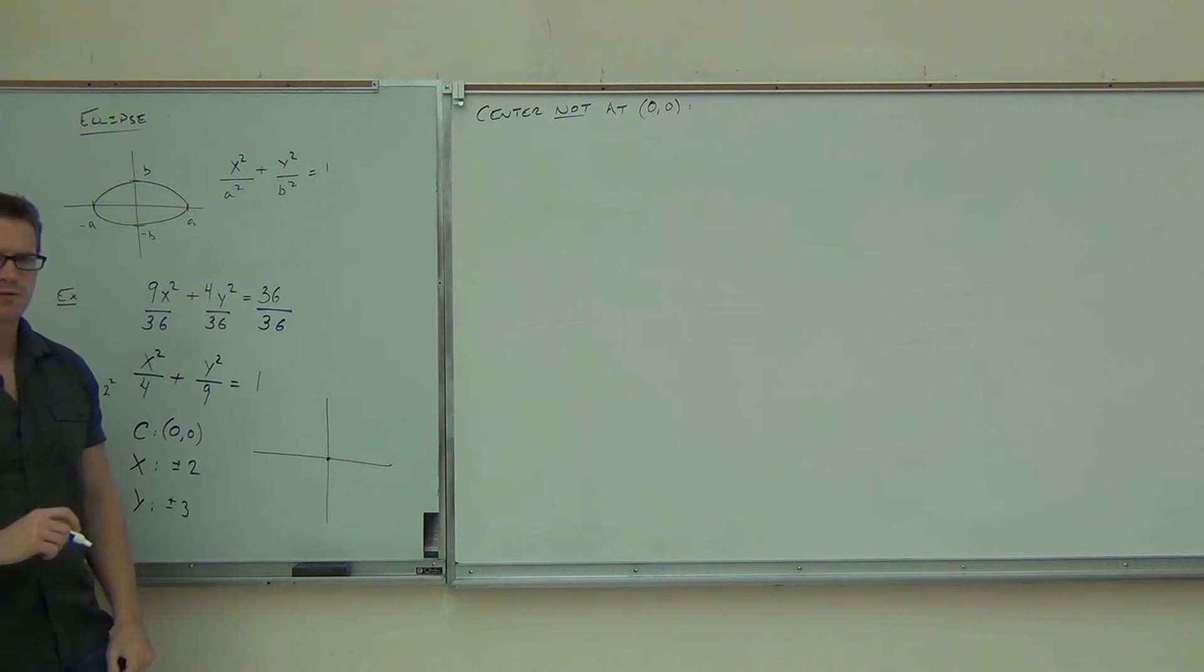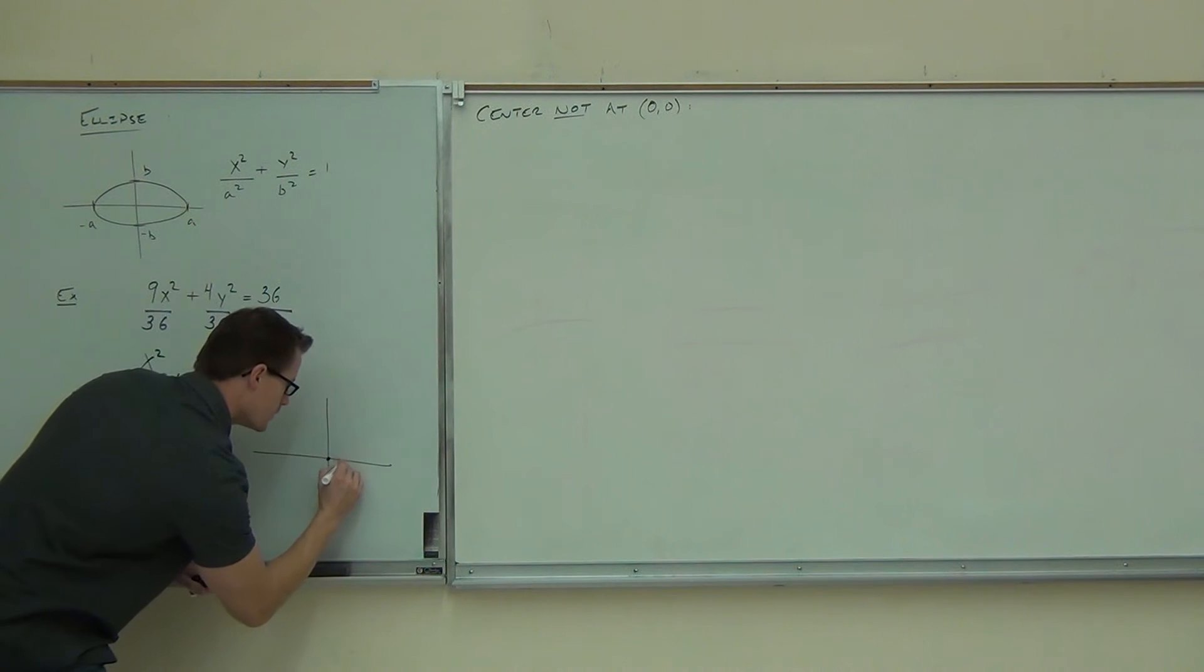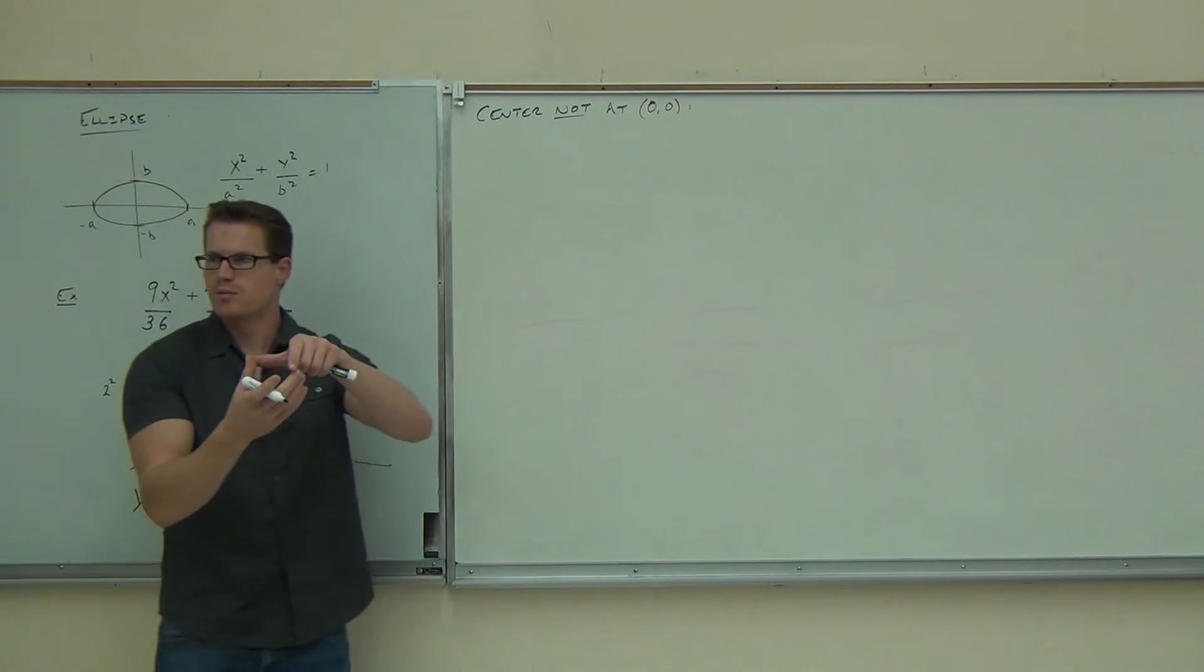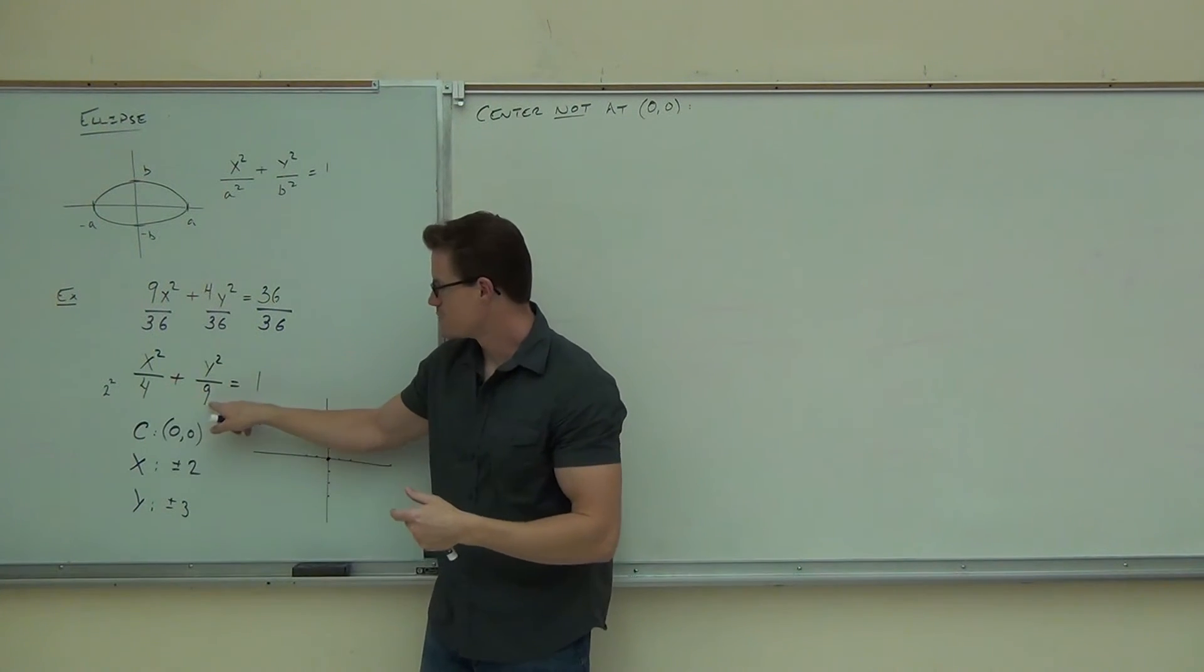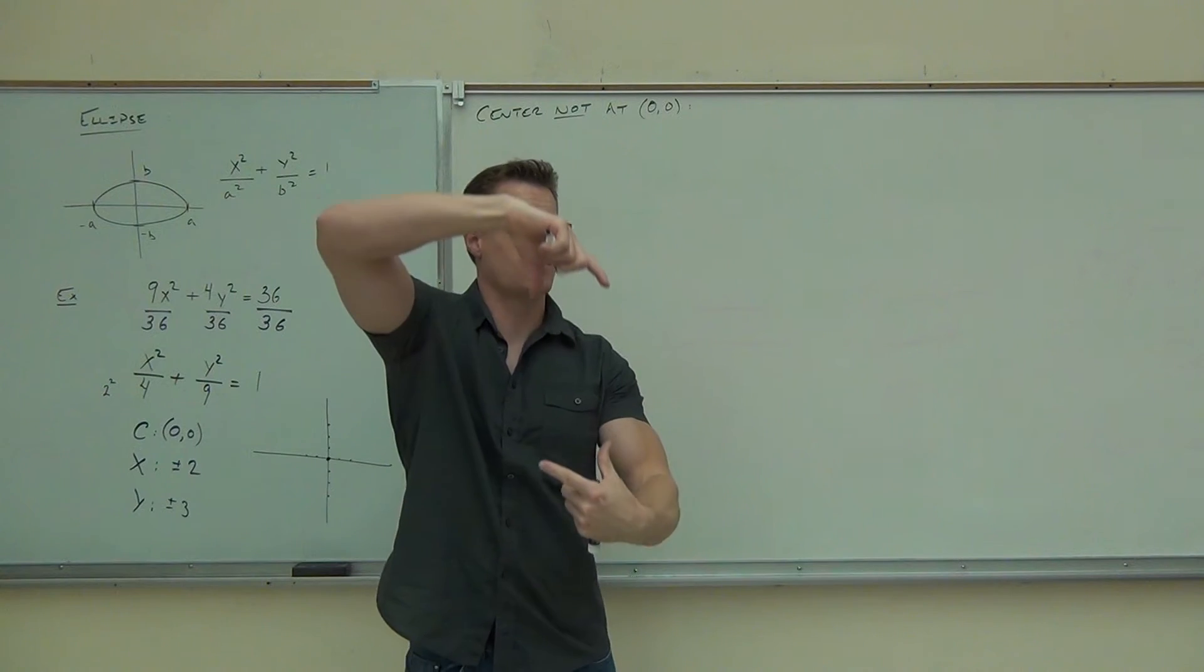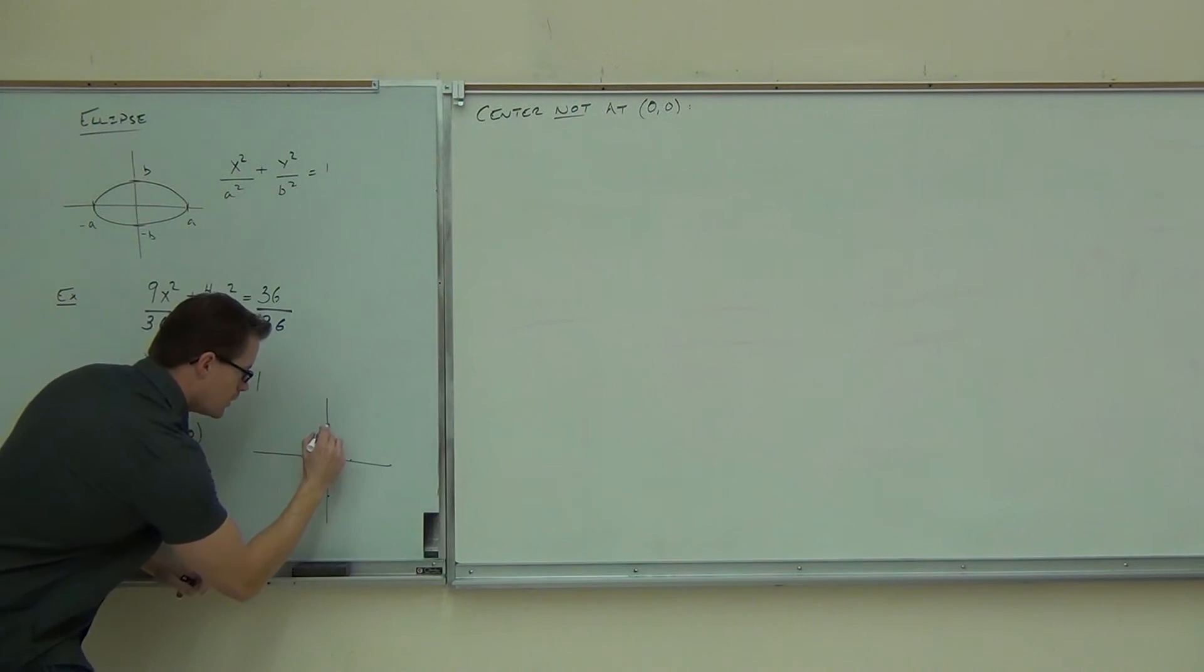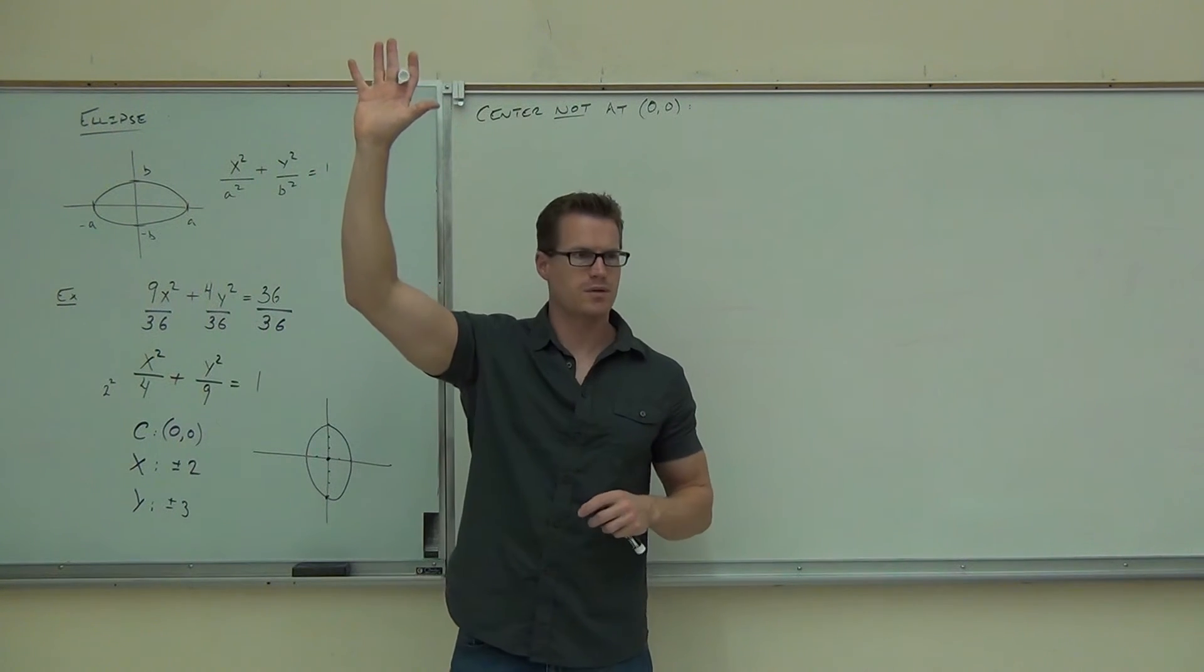So from our center, hopefully you went right two, left two, up three, down three. And it shows you, if you look at that, we are spreading out more along the y just like we thought. It's certainly an ellipse, because these numbers are different. This number was bigger underneath the y, so we're going to spread out more along the y. It's going to make a taller ellipse rather than a wider ellipse. How many people were able to make that picture? Good for you.